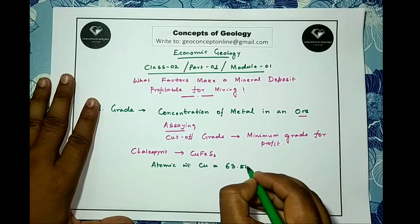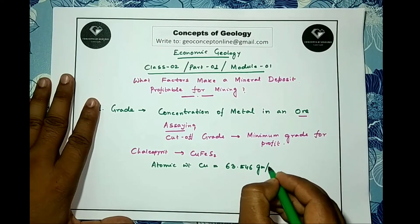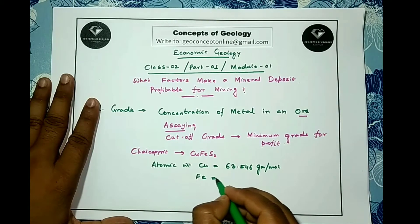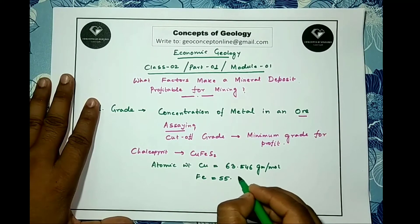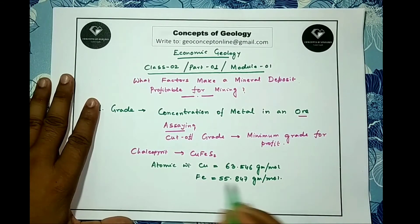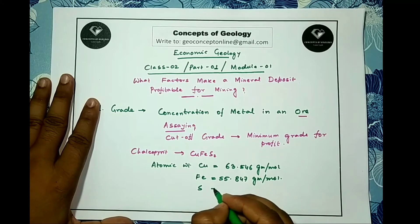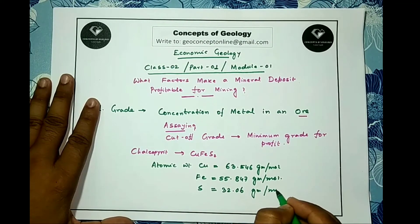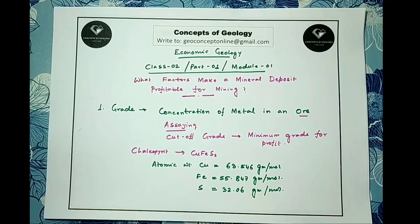Atomic weight of iron is equal to 55.847 grams per mole, and the atomic weight of sulfur is 32.06 grams per mole.